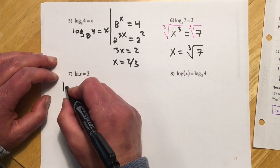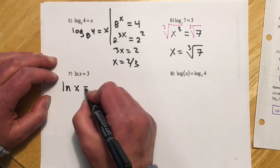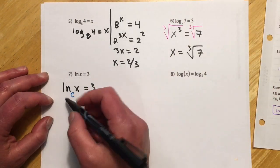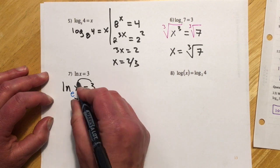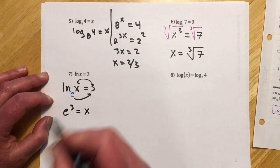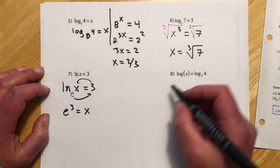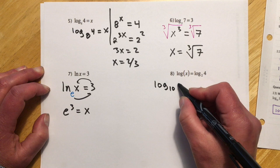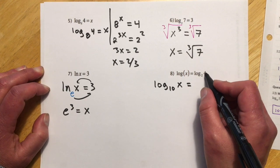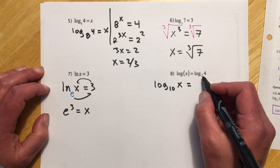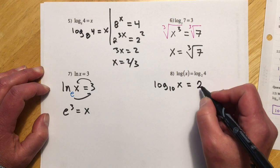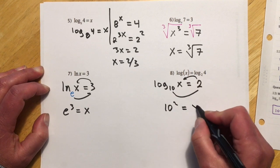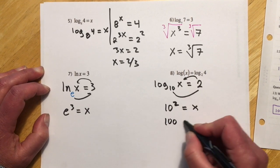For log base x of 7 equals 3: x to the third equals 7. Cube root both sides, so x equals the cube root of 7. For ln x equals 3: think of the little invisible e as the base, so e to the 3rd makes x — leave that as the exact solution. For log x equals log base 2 of 4: log base 2 of 4 is 2, so log base 10 of x equals 2, meaning 10 squared makes x, and x equals 100.